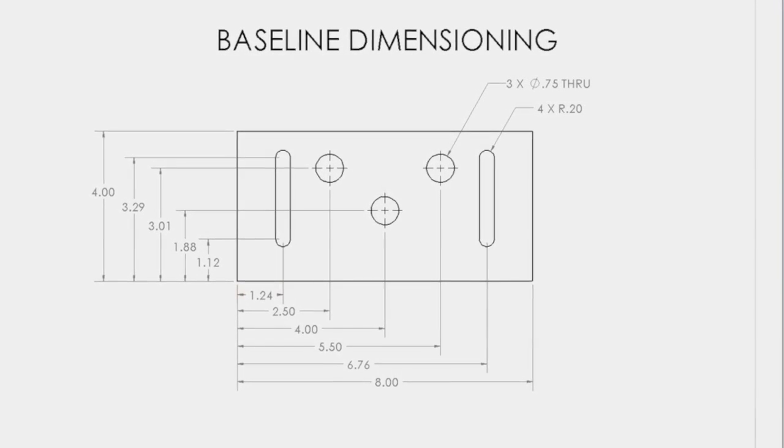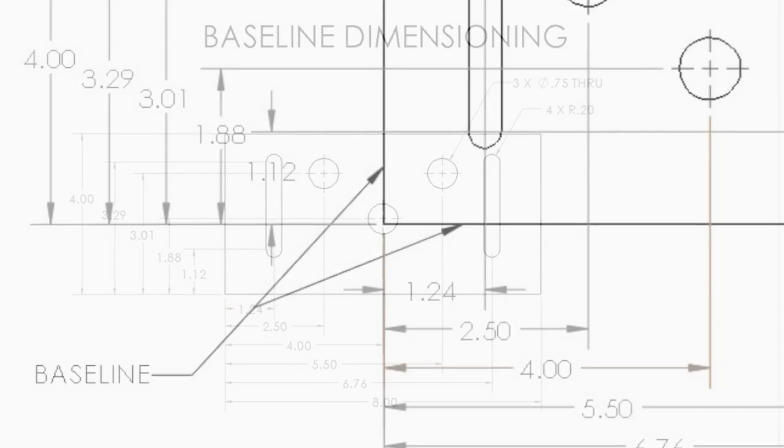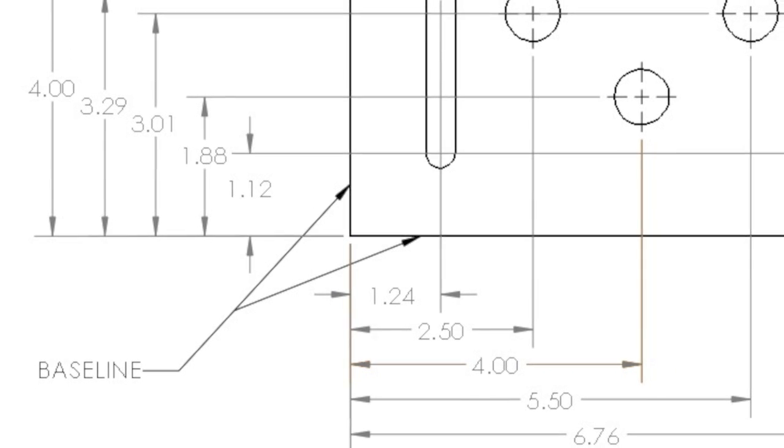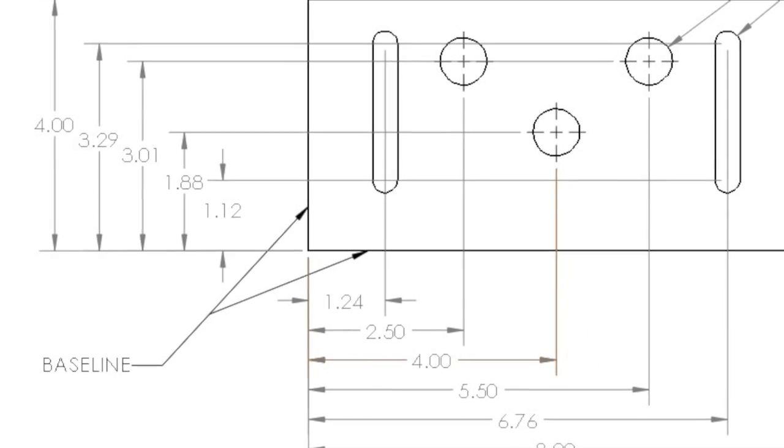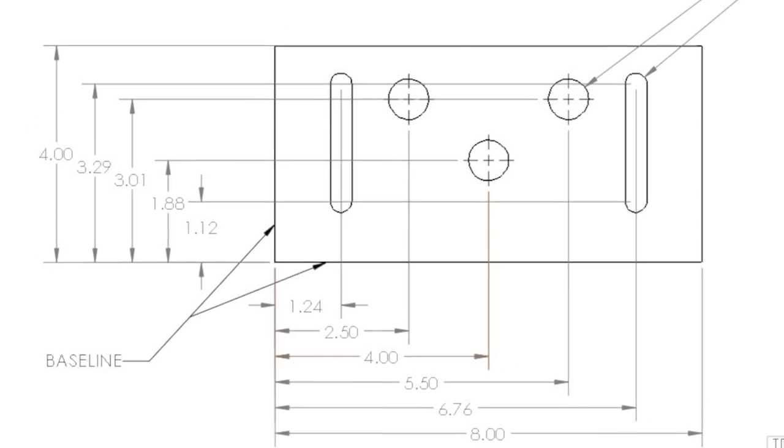Notice that all of the dimensions in the x-axis are referenced from the left side of the part. In this case, the object line of the part is used as a baseline to base all horizontal and vertical measurements. The tolerance of all size and location features will be calculated to this baseline.